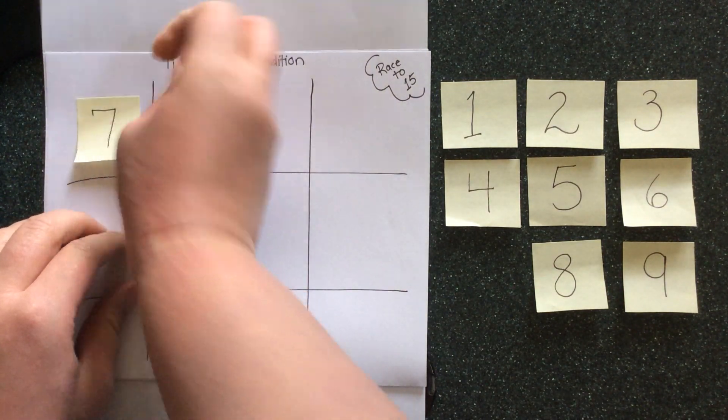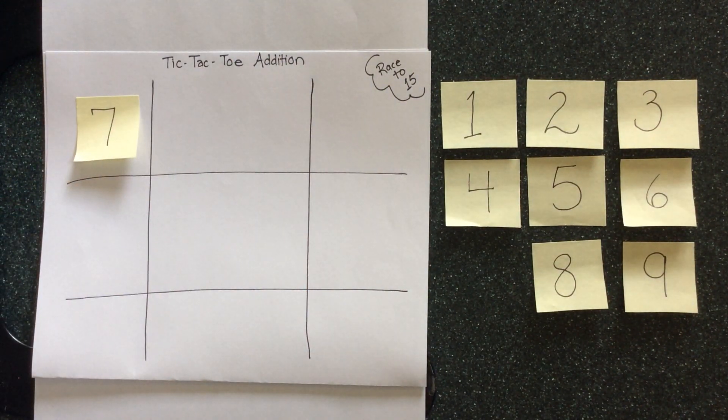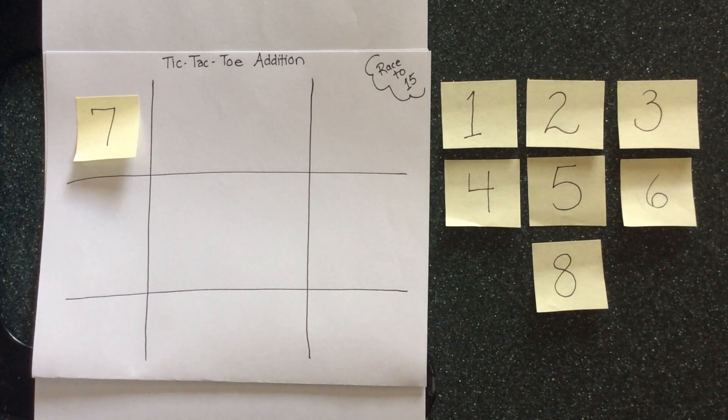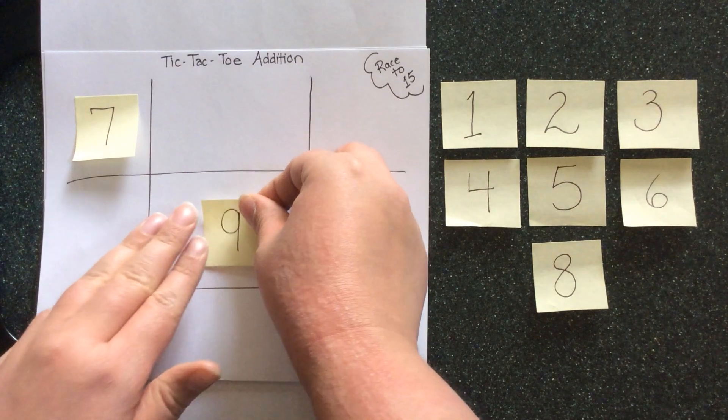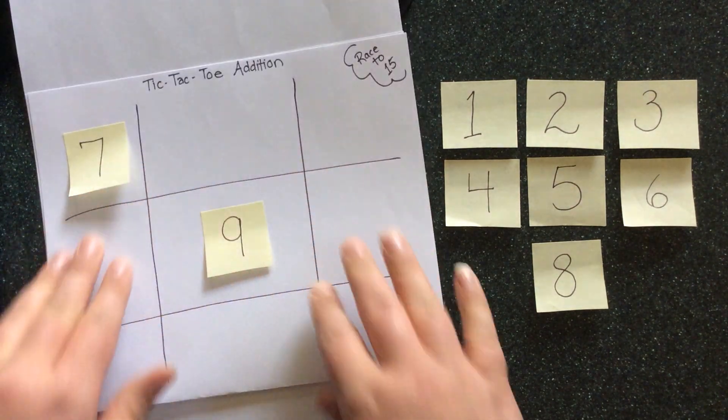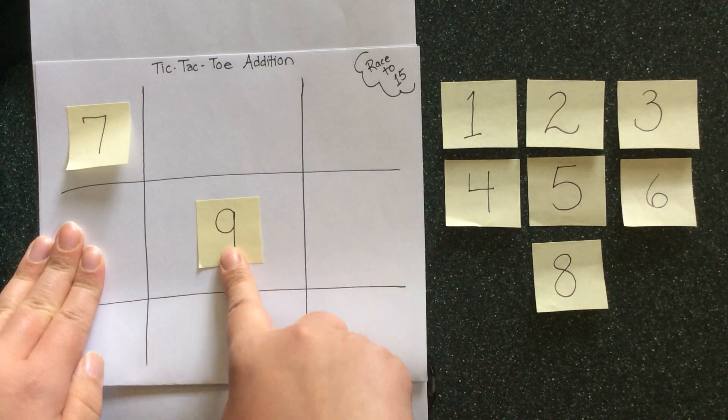So I'm going to put a 7 right there. Then it's the next person's turn and they have to decide what number to write. So I'm gonna choose 9 because I know there's no way that I can get 15 with 3 numbers on my second number.